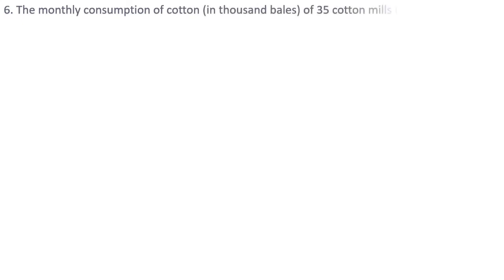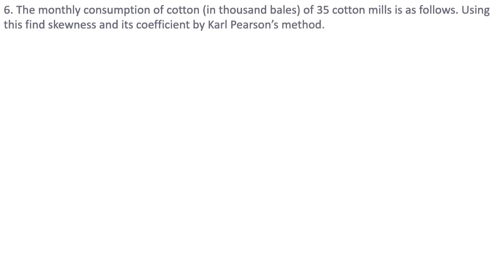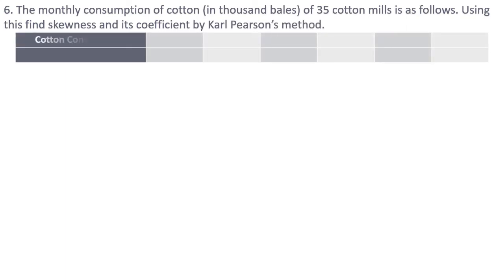Moving on to question number 6. The monthly consumption of cotton in thousand bales for 35 cotton mills is given. We have to find skewness and its coefficient by Carl Pearson's method. The data is cotton consumption in thousand bales with classes: 0–2, 2–6, 6–12, 12–20, 20–22. All classes are exclusive but their class lengths are different: 2, 4, 6, 8, and 2 respectively. Since class lengths are unequal, mode cannot be calculated using simple methods.